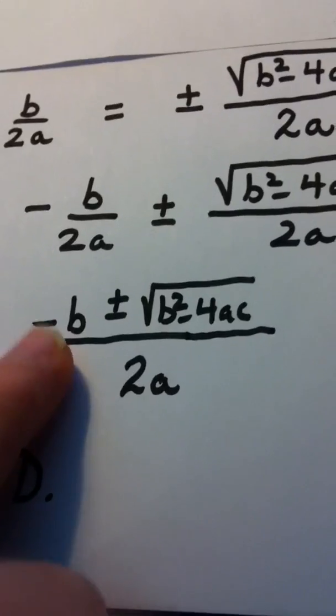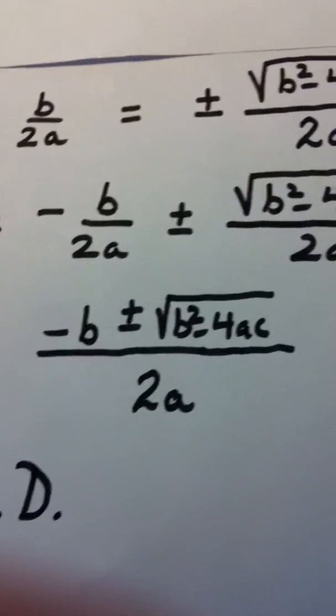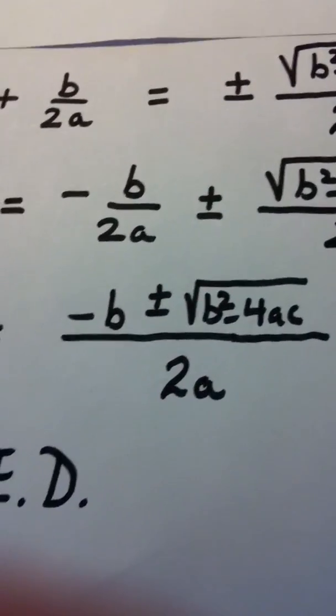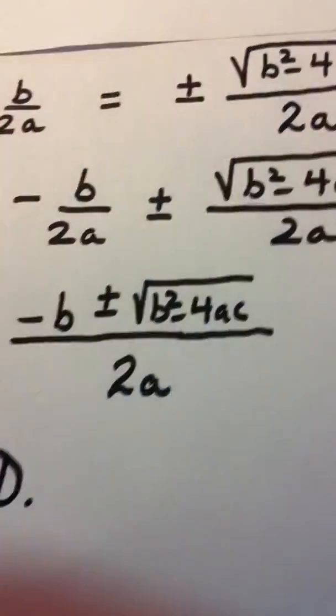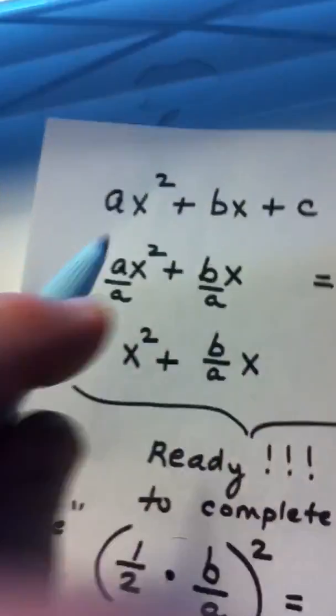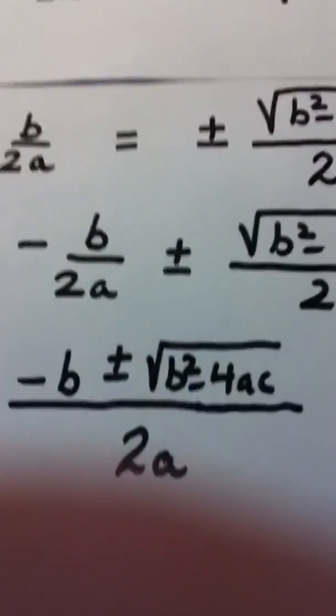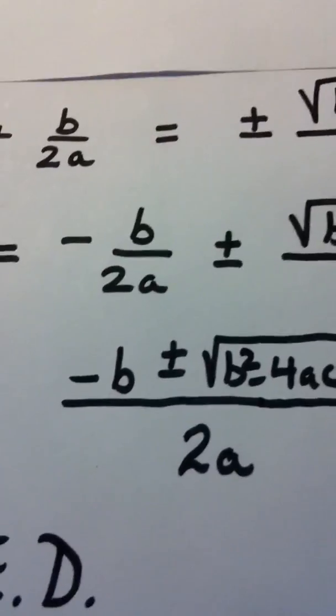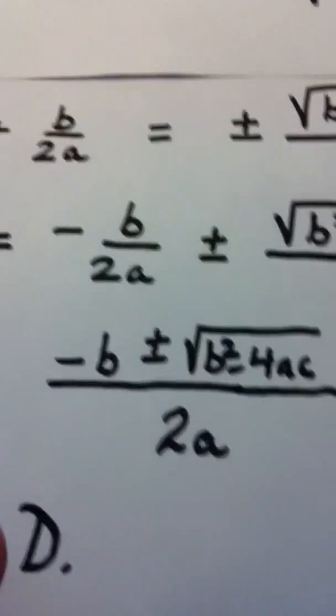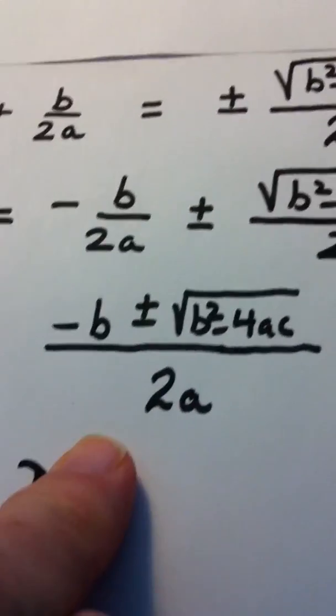x is equal to the opposite of b plus or minus the square root of b squared minus 4ac all over 2a. And that whole thing, if this is true, then these are how you find their answers. That is called the quadratic formula. Okay? And you need to memorize this.